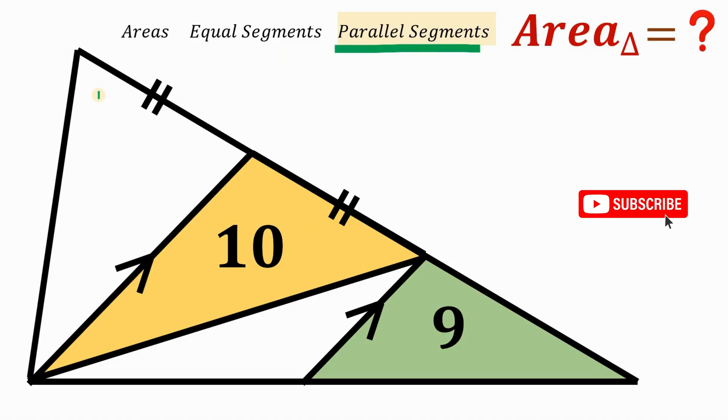Now, how about equal segments? Take note, we have here two triangles. And we have equal bases. Now, we have equal heights. Therefore, they have the same area. So using equal segments, we can say that these two triangles have the same area because they have the same height and the same base.